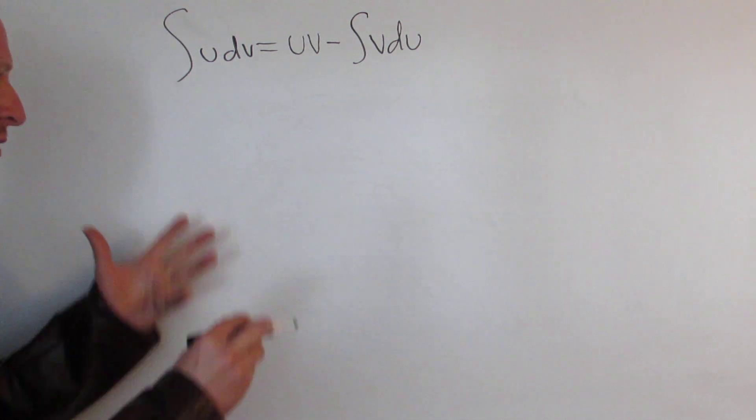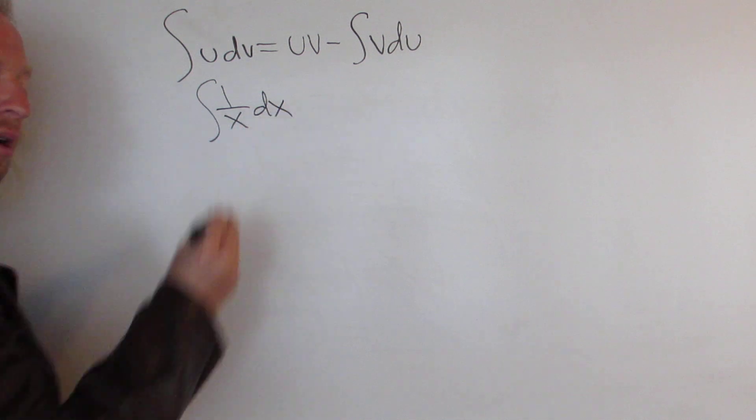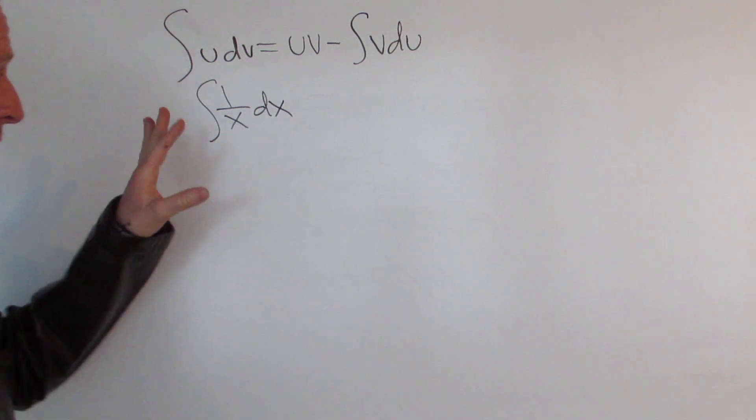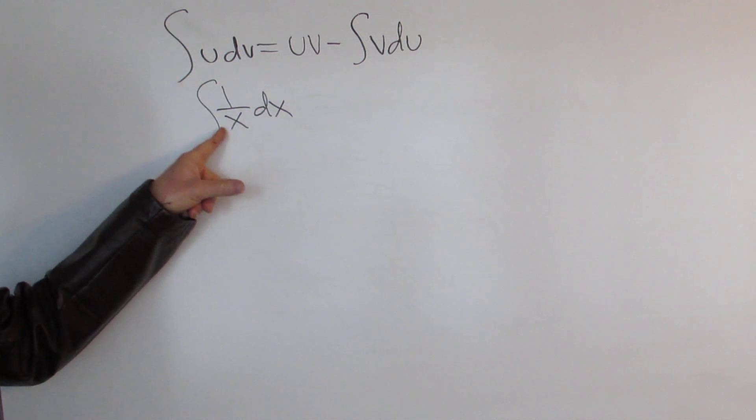Let's go through it carefully. So we're going to integrate 1 over x dx. In order to use parts on this integral we have to pick our u and we have to pick our dv. So our u will be 1 over x.